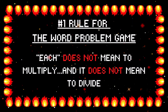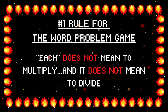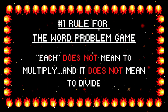There's only one rule for this game. The number one rule for the word problem game: 'each' does not mean to multiply and it does not mean to divide. Maybe you're a teacher and you've been telling your kids that when you see the word 'each' in a certain part of the word problem it means multiply, or if you see it at the end it means divide. Please stop saying that. Each does not mean that. If you're a student and your teacher has been telling you that, you should always listen to your teacher — except for that. Because it may help you get the right answer, but it's not helping you understand how to do it properly. So 'each' does not mean to multiply and it does not mean to divide.